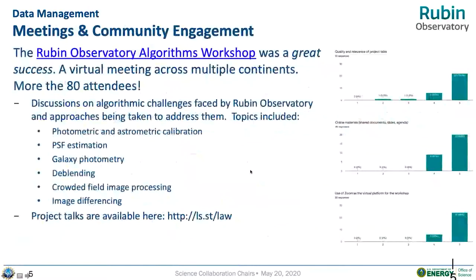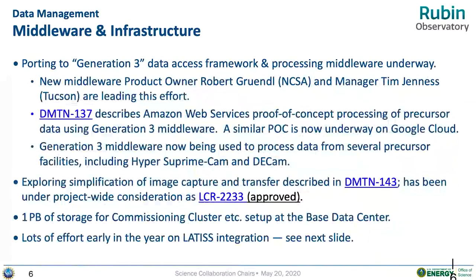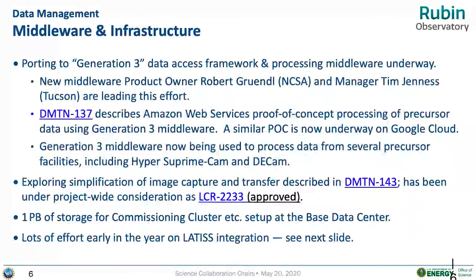Further progress in the data management arena is the development of the Gen 3 data access — also known as the Gen 3 Butler. There's been some rearrangement in personnel attending to it, and progress is being made. DM has done a proof of concept using web-based services from Amazon for this middleware, and it's now being used to process data from several precursor facilities.